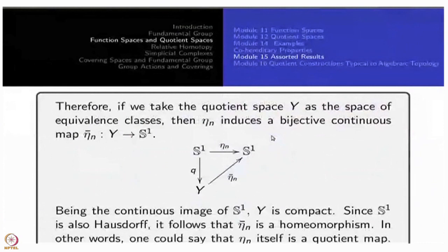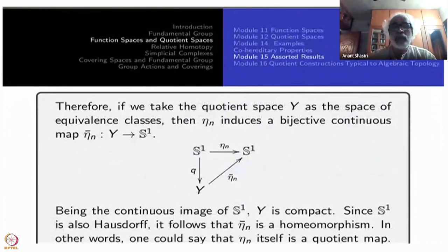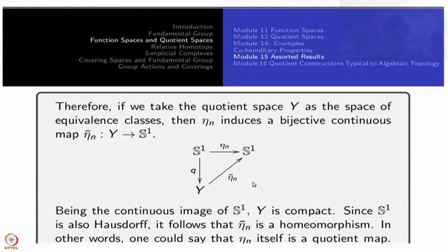This is the picture that we have, S^1 to S^1, to take the quotient by action of n-th roots of unity here, so this is the action of Z by Z, Z by n·Z, so again what you get is again isomorphic to S^1, homeomorphic to S^1.